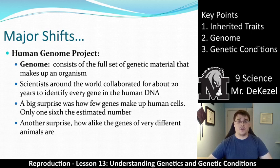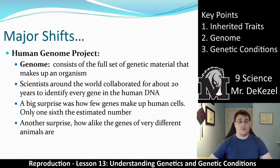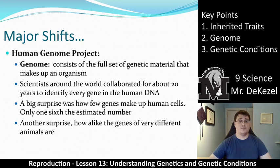Scientists around the world collaborated for about 20 years to identify every gene in human DNA. One big surprise was how few genes make up human cells — only one-sixth of the estimated number. Another surprise was how alike the genes of very different animals are — very small changes can cause very real differences between animals.